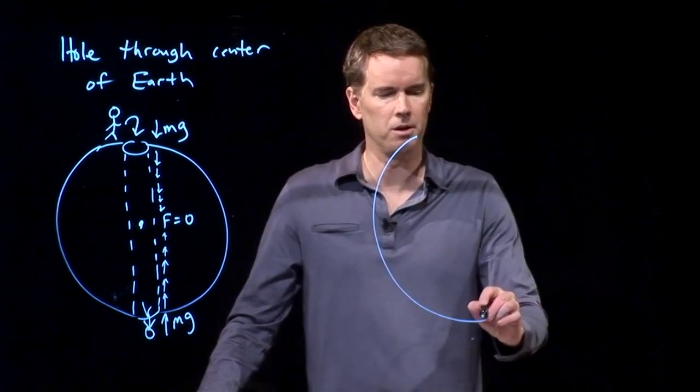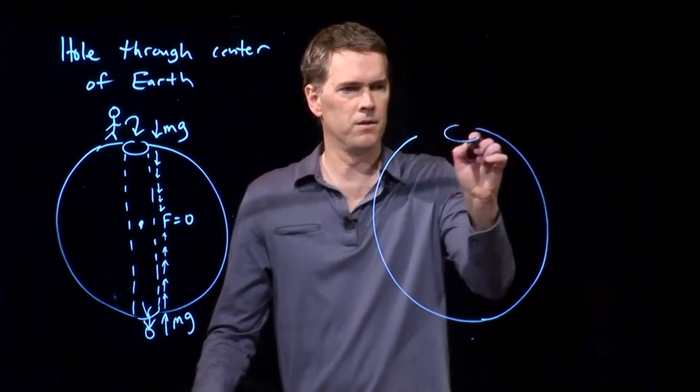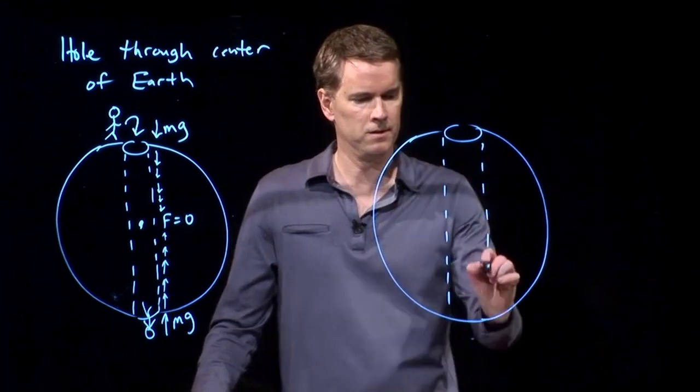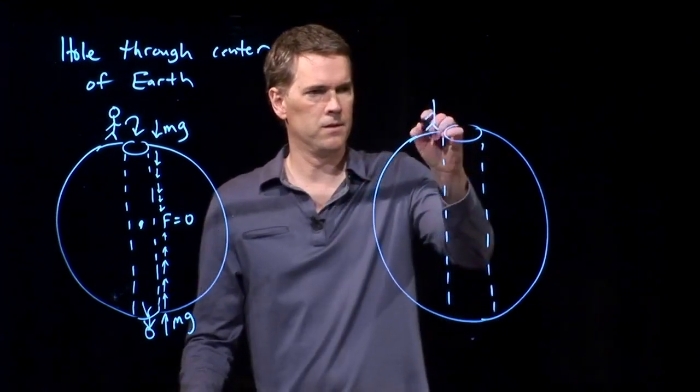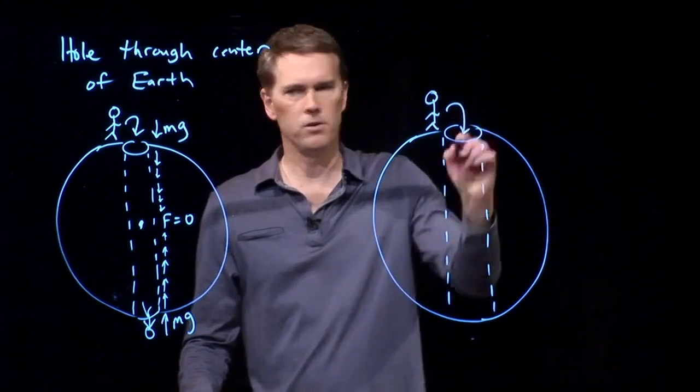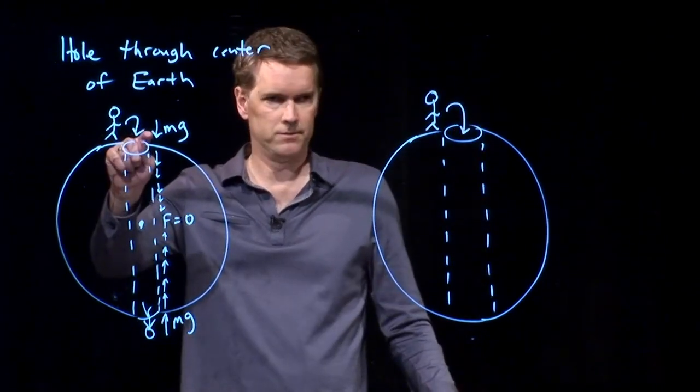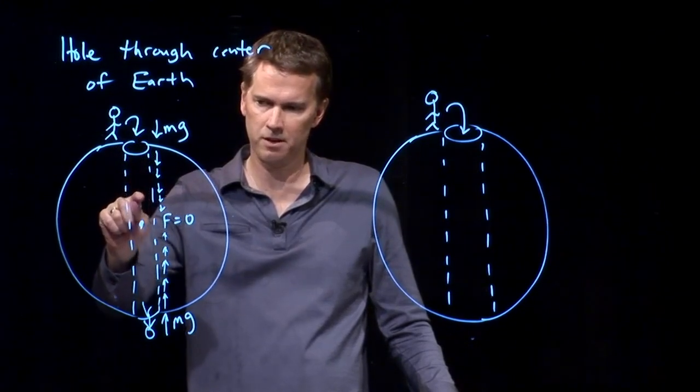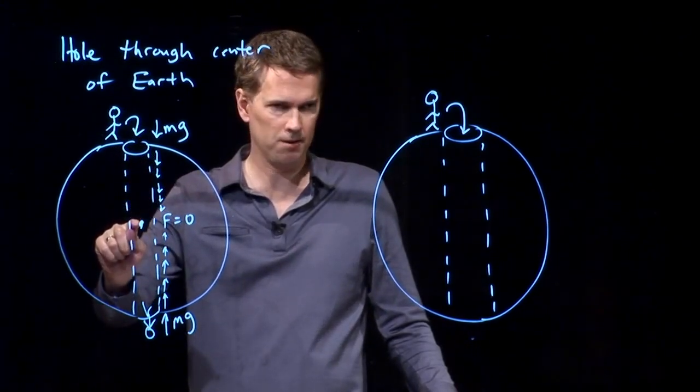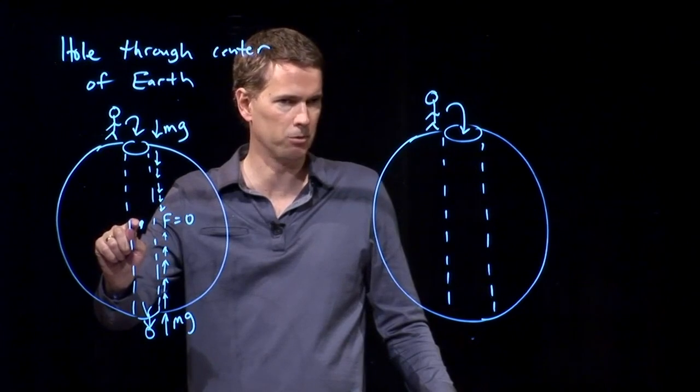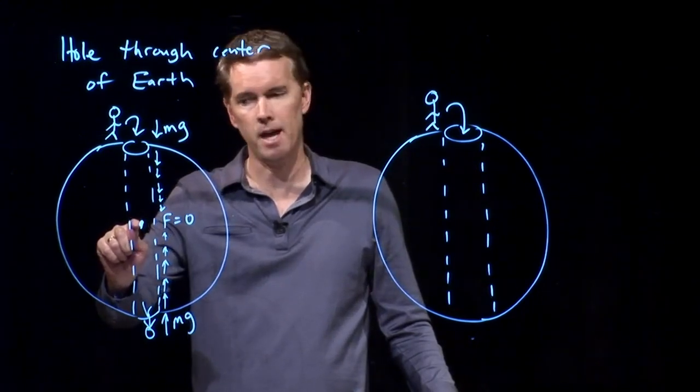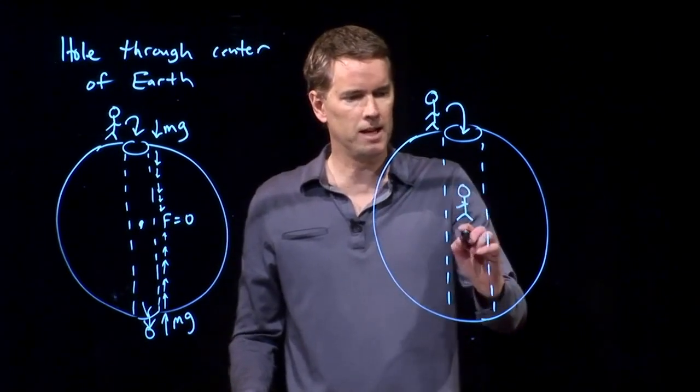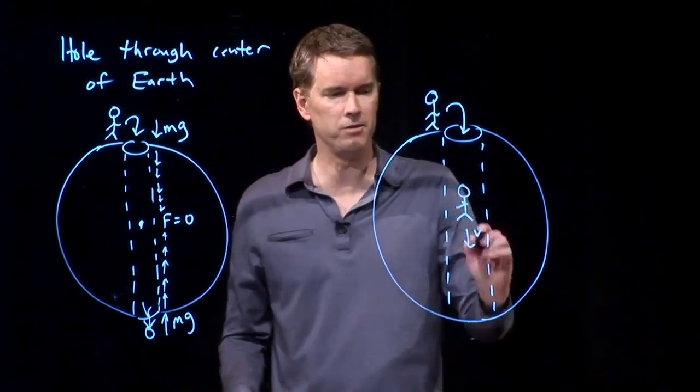So the guy that jumps in the hole here, what is he going to do? He is going to accelerate continuously all the way down to here, and then his acceleration goes away. And then he is moving at a really high speed. When he gets to that position, he is flying at some high speed V.